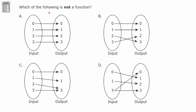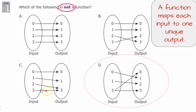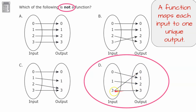Which of the following is not a function? A function maps each input to exactly one unique output. Choice A maps every input to one output — it's a function. Choice B: zero to one, one to one, two has one output, three has one output — it's a function. Choice C maps each input to one output — it's a function. Choice D: input three maps to both zero and three — two different outputs — so D is not a function.